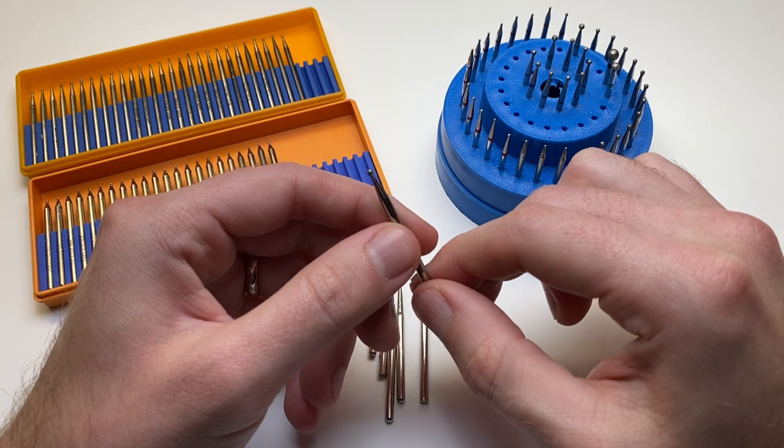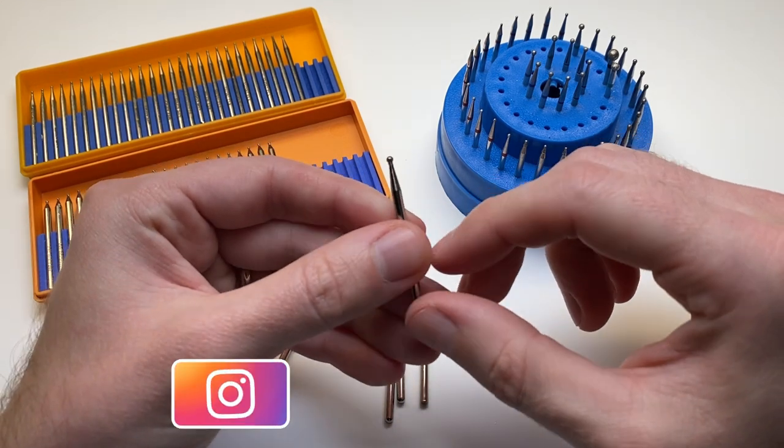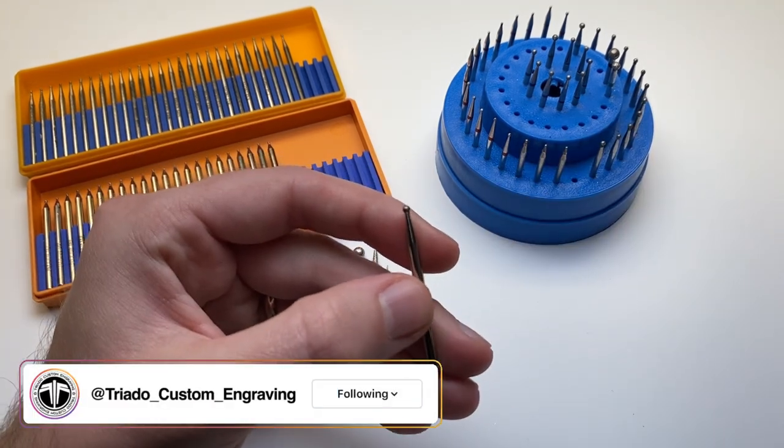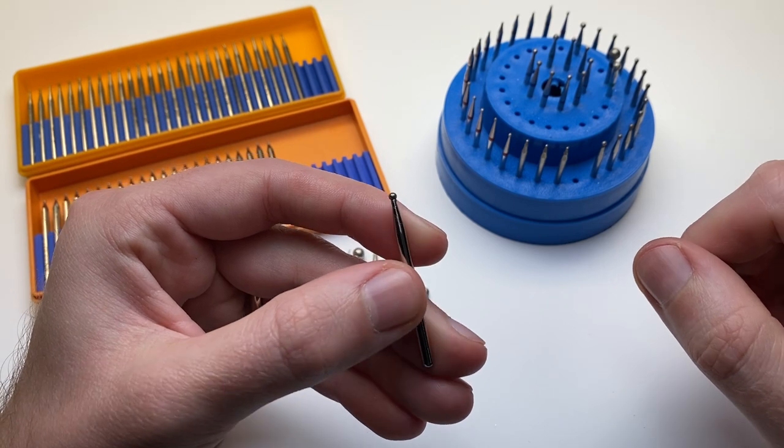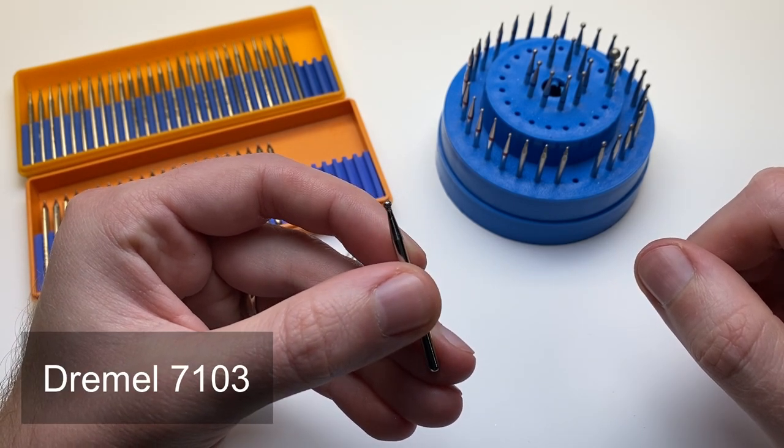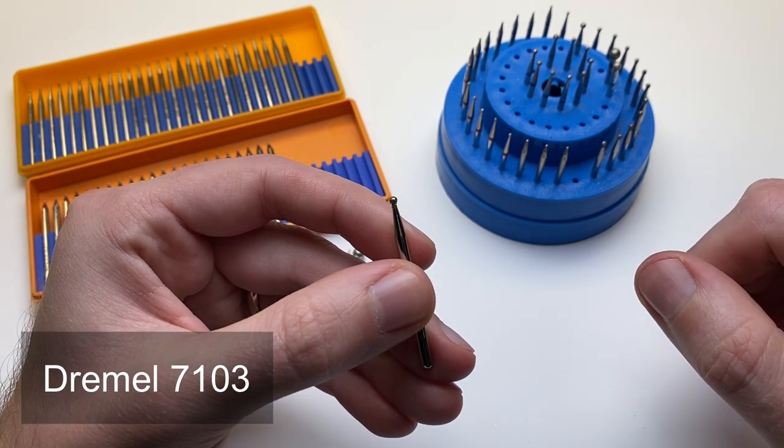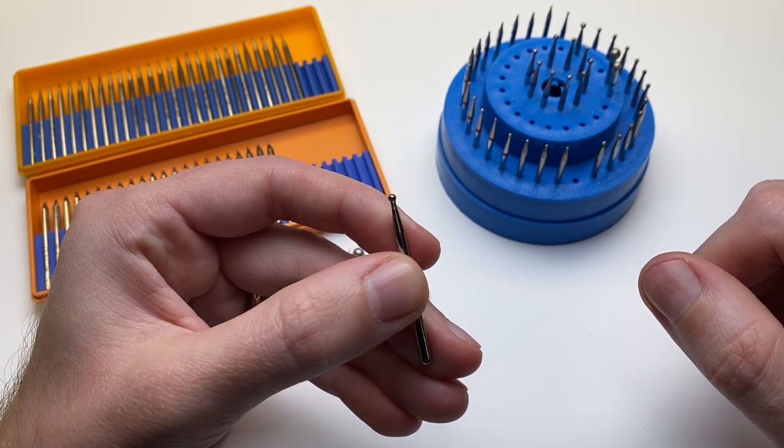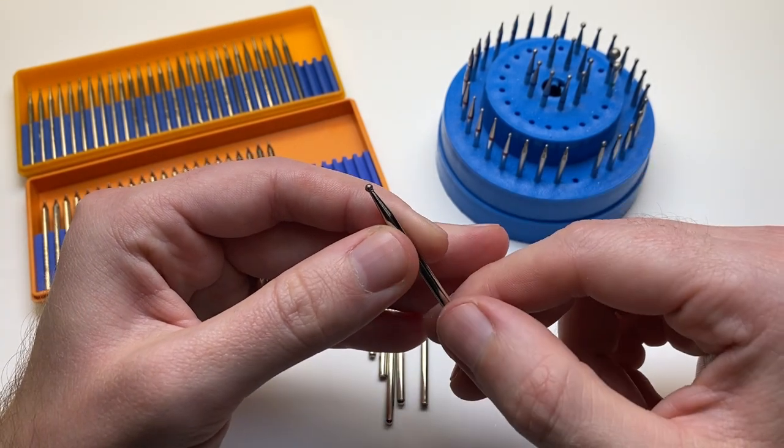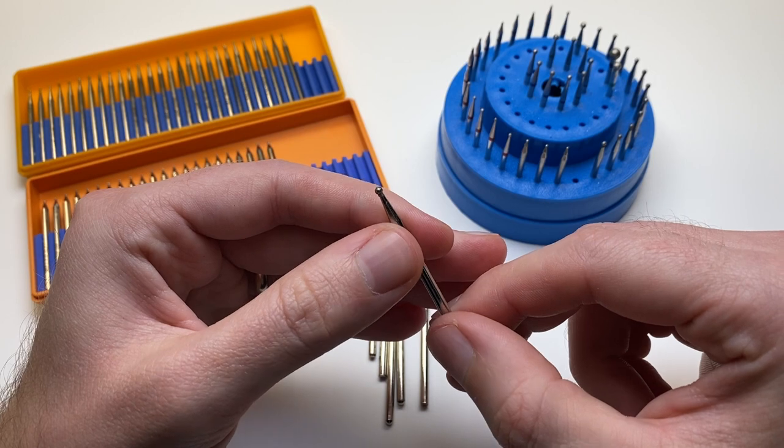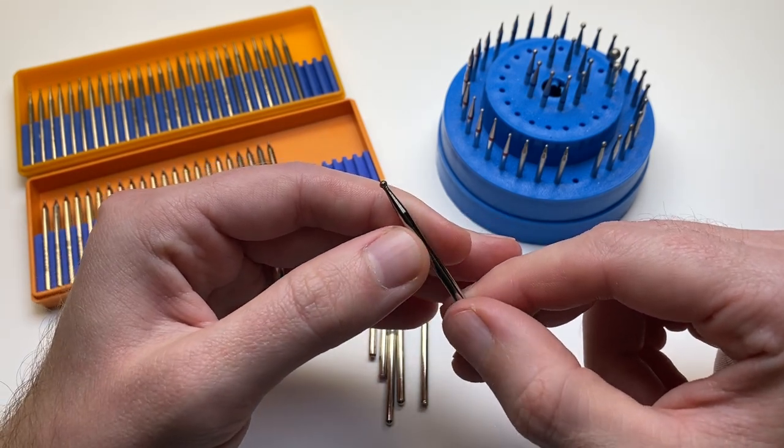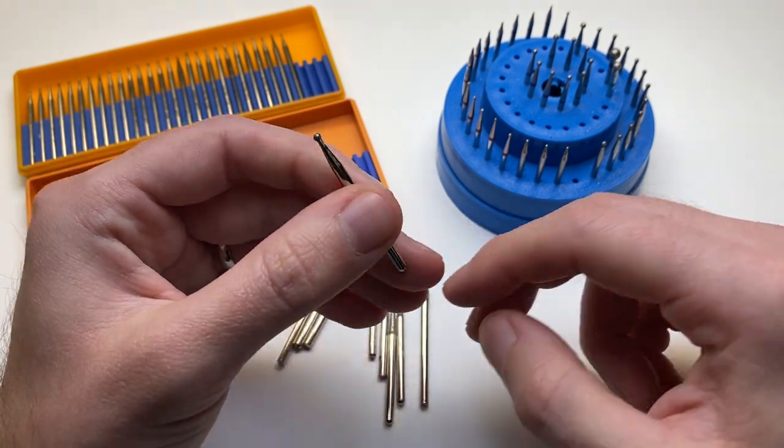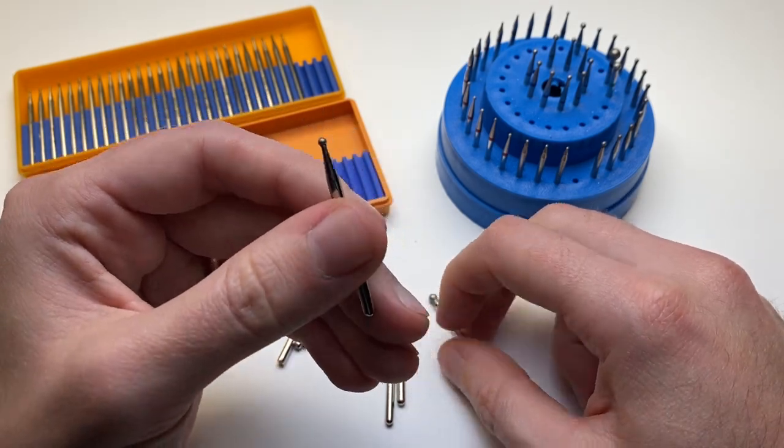So starting with Diamond Burr, this is something that I started with when I started engraving cups. This one in particular is 7103 made by Dremel. I really like this one although it costs about 10 bucks so it's a little bit expensive. I found them on eBay you can get them a little bit cheaper but yeah these are pretty good.